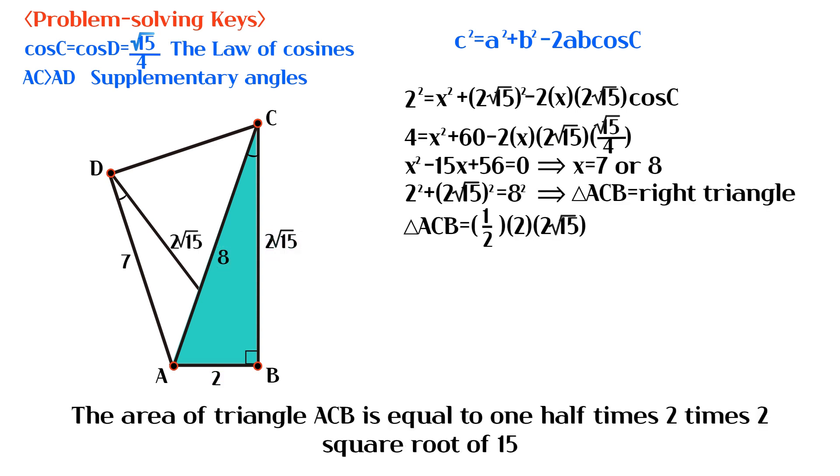The area of triangle ACB is equal to 1 half times 2 times 2 square root of 15.